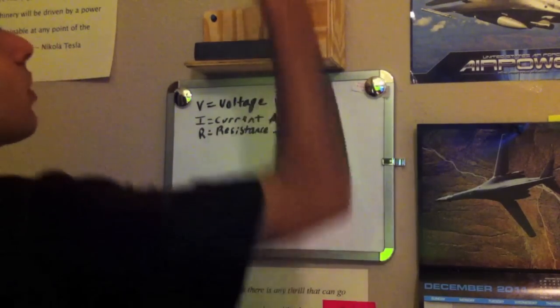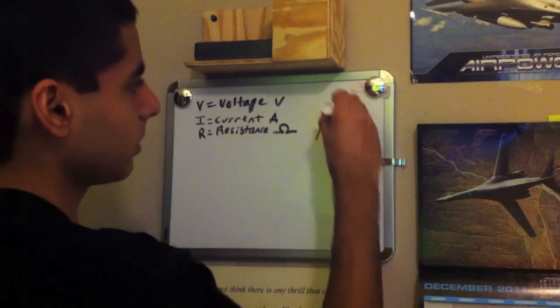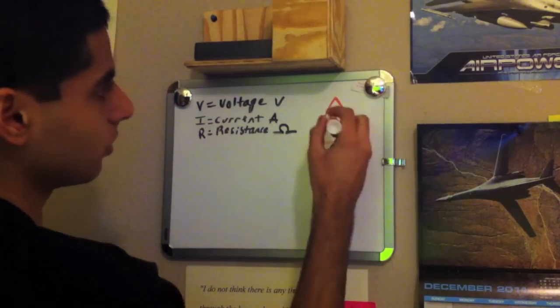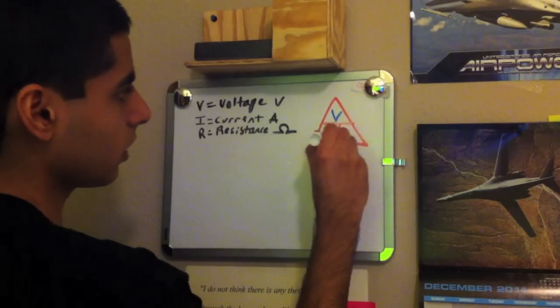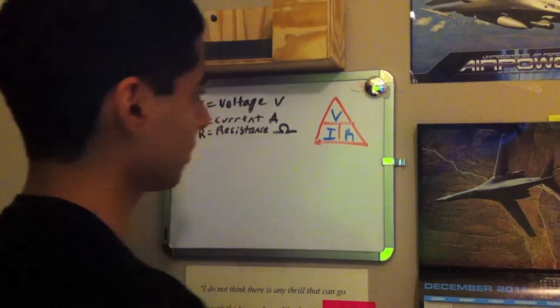A really simple way to remember it is by drawing a triangle, and you draw a triangle on your paper and write VIR, which shows the relationship in a simple way.